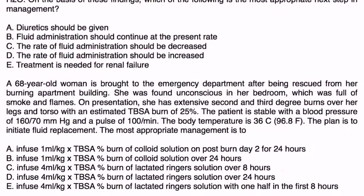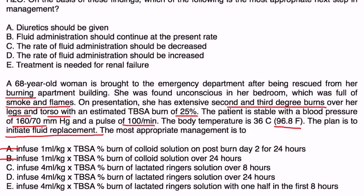A 68-year-old woman is brought to the emergency department after being rescued from a burning apartment building. She was found unconscious in her smoke-filled bedroom. She has extensive second and third degree burns over her legs and torso with an estimated TBSA of 25%. The plan is to initiate fluid replacement using the modified Parkland formula. We know the formula uses 4 mLs per kg, so choices A and B are eliminated. The correct administration is to give the first half in the first 8 hours and the second half in the next 16 hours — the answer is E.